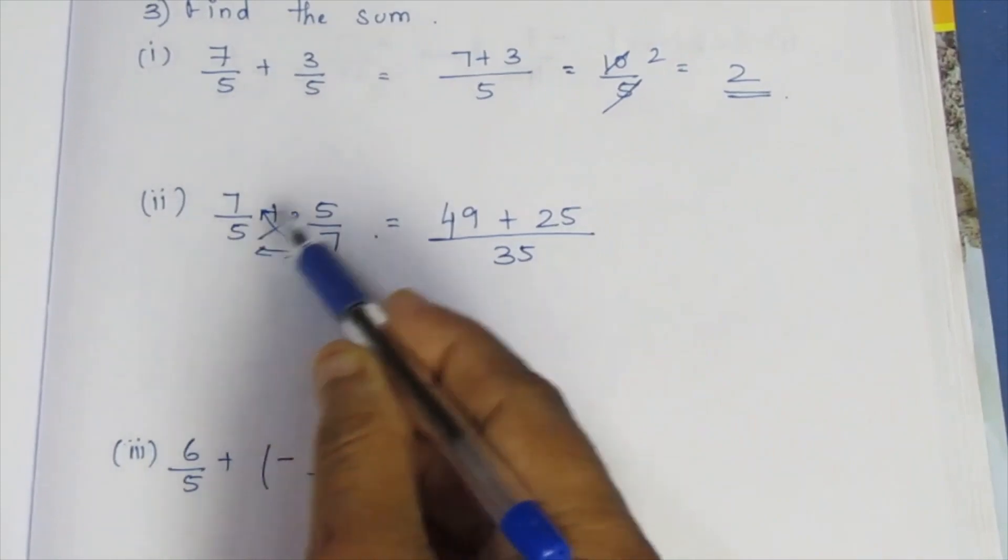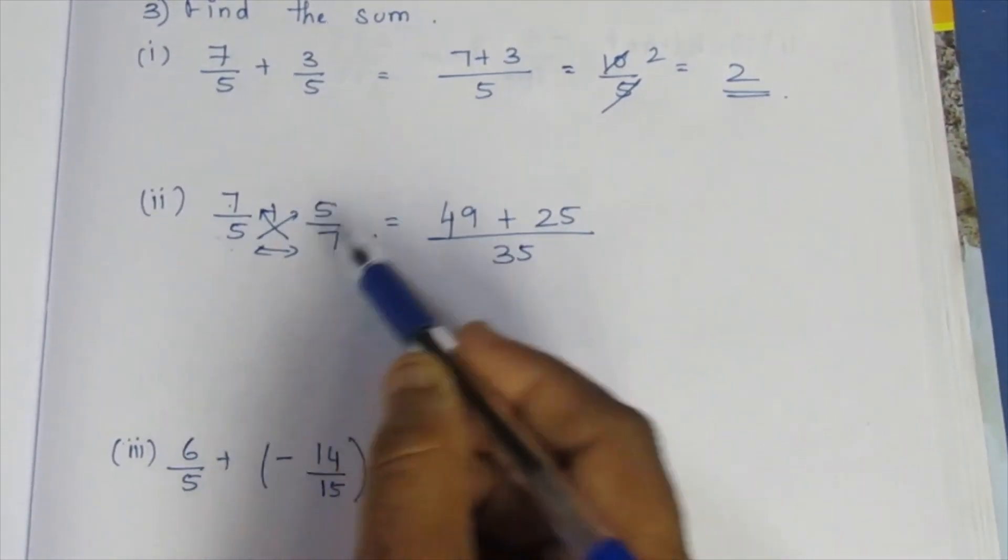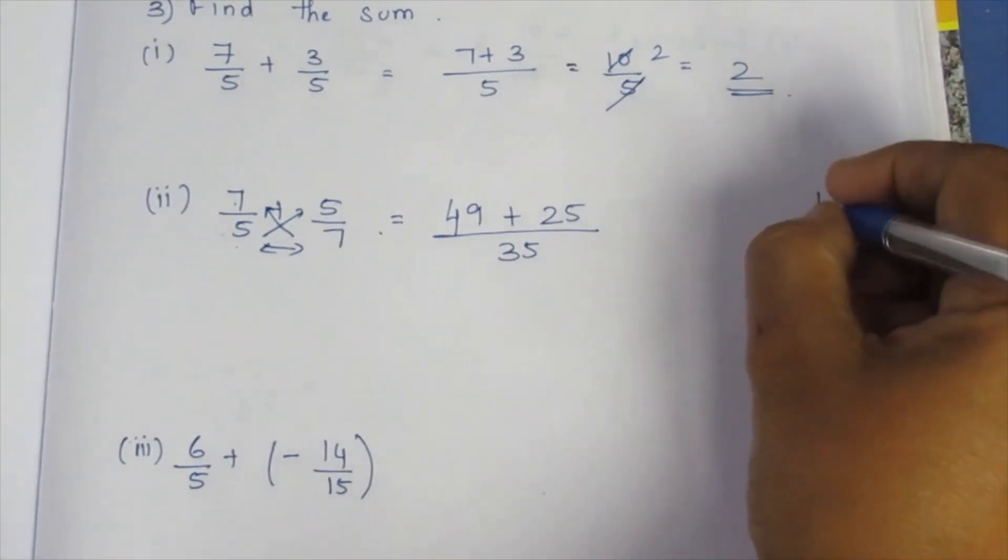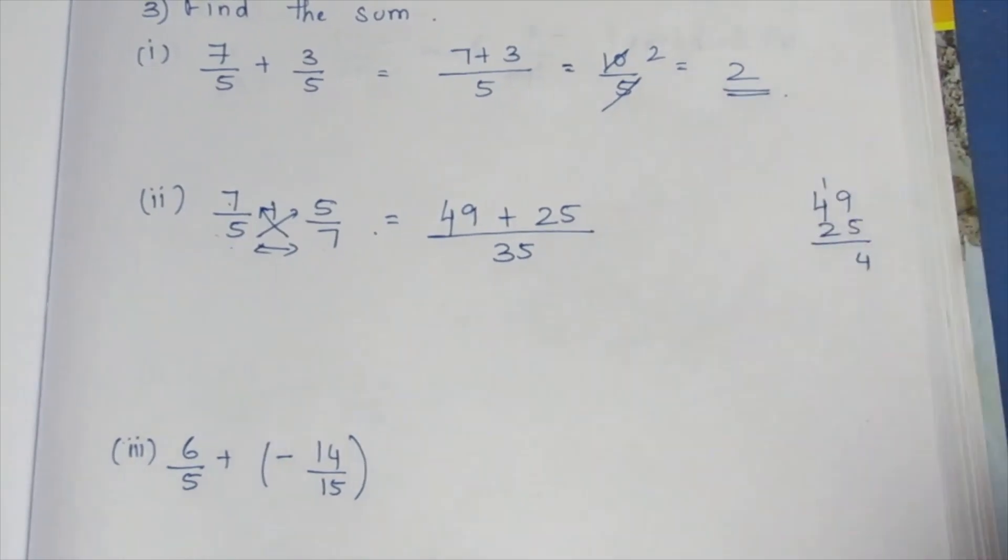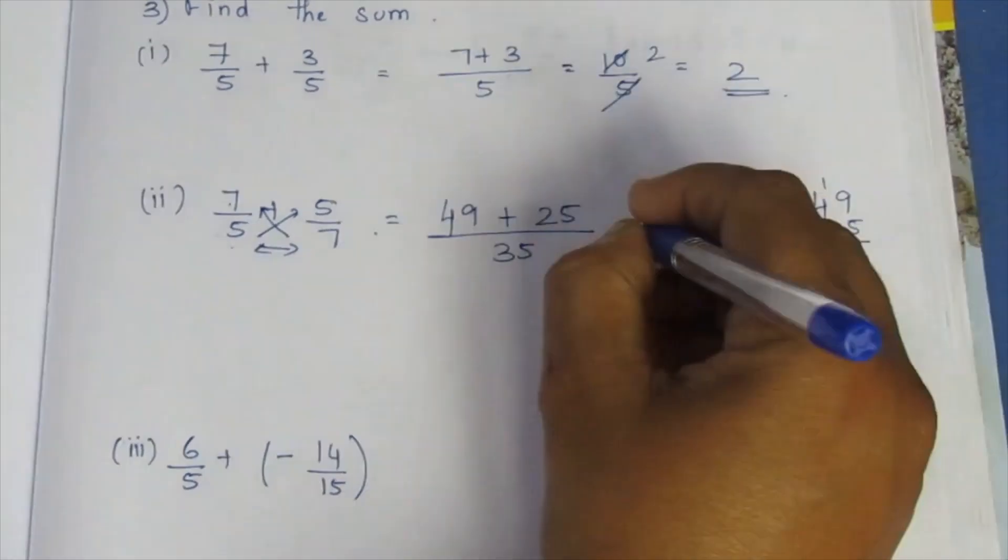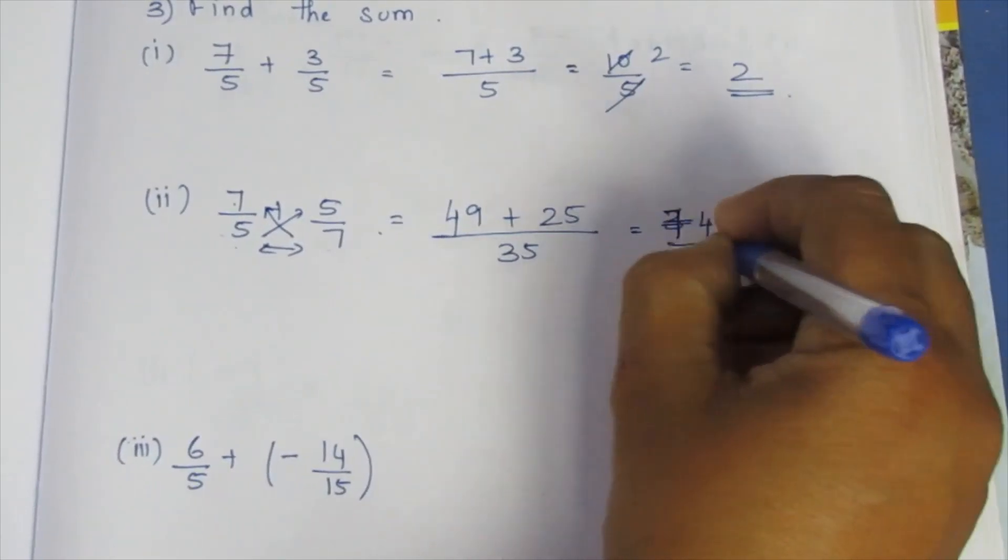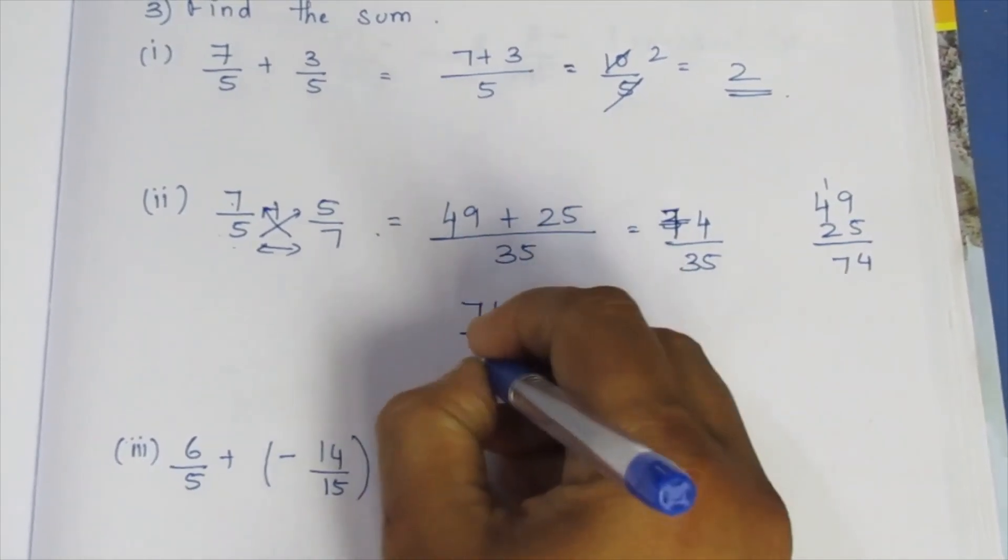Let's look at the numerator. The denominator is 35, so 7 multiplied by 7 is 49 plus 5 multiplied by 5 is 25. 49 plus 25 is 74. 74 by 35, so this answer is 74 by 35.